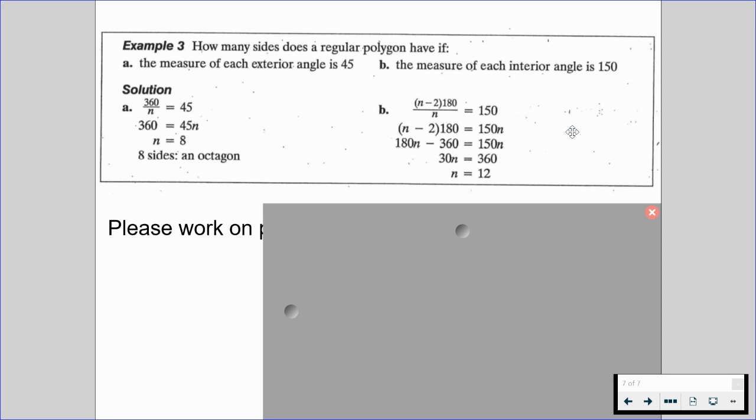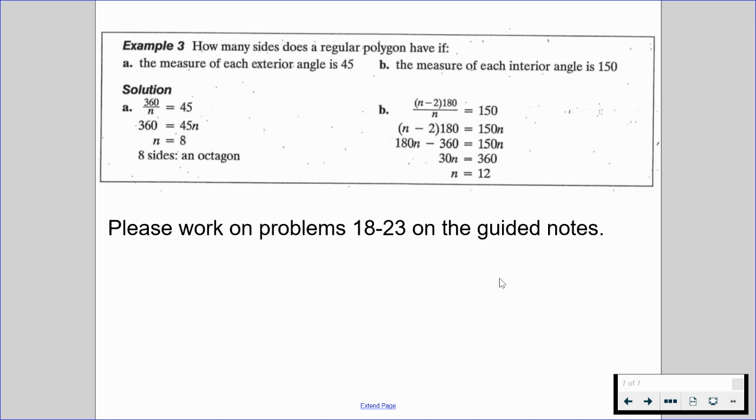Well, that's going to be equal to 150 because we know each interior angle is 150, and that's what we're trying to find. We multiply both sides by n. We can then distribute 180 inside, and we can use our algebra skills to find that we end up with a 12-sided figure or a 12-gon.